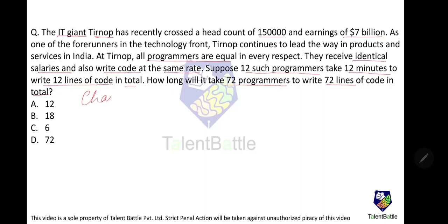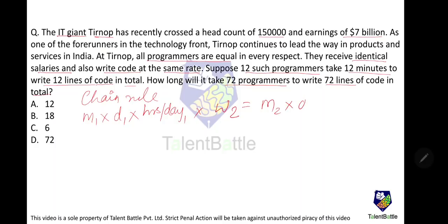This is a sum of chain rule. The formula is: (men₁ × time₁ × work₂) = (men₂ × time₂ × work₁). Number of men in the first case is 12, time taken is 12 minutes, work done in the second case is 72 lines of code, equal to men in the second case (72) times time x, times work done in first case (12 lines of code).